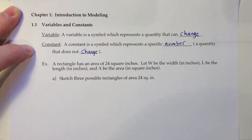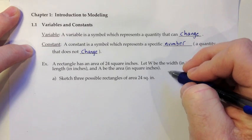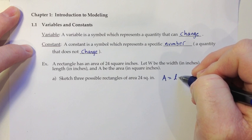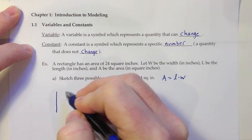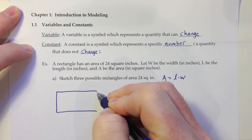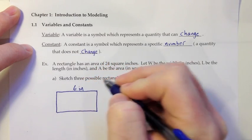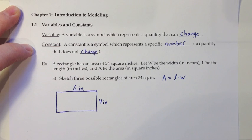Let's take a look at an example to understand this a little better. A rectangle has an area of 24 square inches. Let W be the width in inches, L be the length in inches, and A be the area in square inches. Sketch three possible rectangles of area 24 square inches. So, the first thing we might want to start off with here would be the formula. For the area of a rectangle, we have A equals L times W, or area equals length times width. When we go to sketch this, we have to decide on our length and width, and we have to make sure that those multiply out to 24. One possible way to do that would be 6 inches by 4 inches.